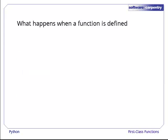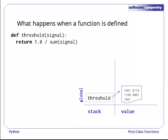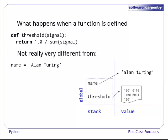To understand why, let's have a closer look at what actually happens when we define a function. These two lines of code tell Python that threshold is a function that returns 1.0 over the sum of the values in signal. When we define it, Python translates the statements in the function into a blob of bytes, then creates a variable called threshold and makes it point to that blob. This is not really any different from assigning the string Alan Turing to the variable name. The only difference is what's in the memory the variable points to.